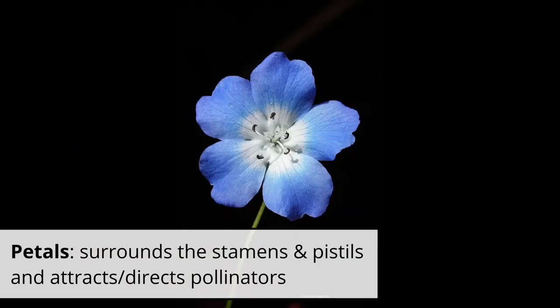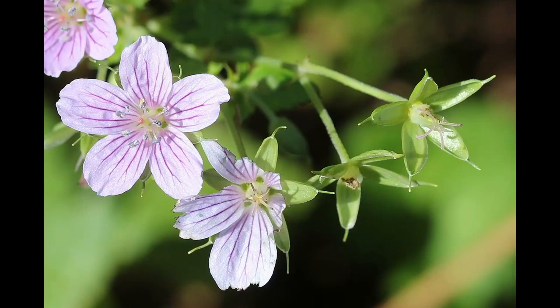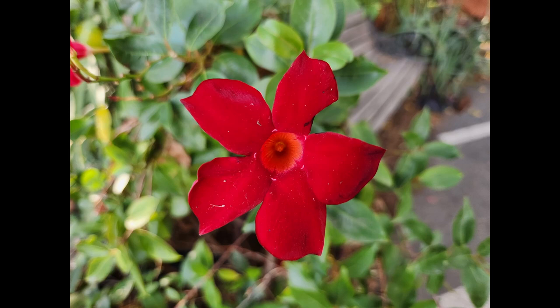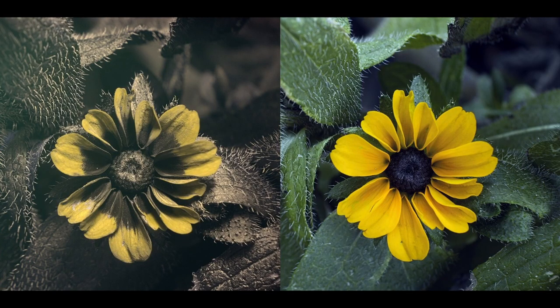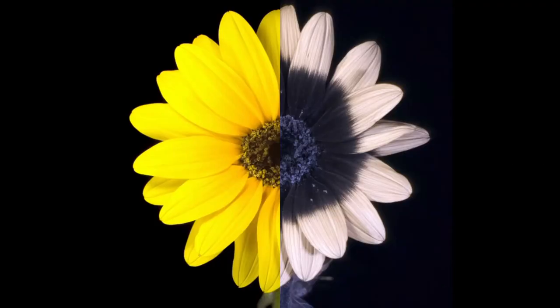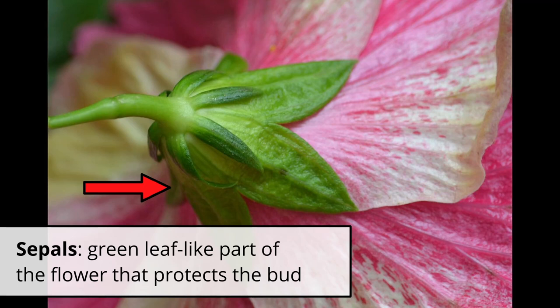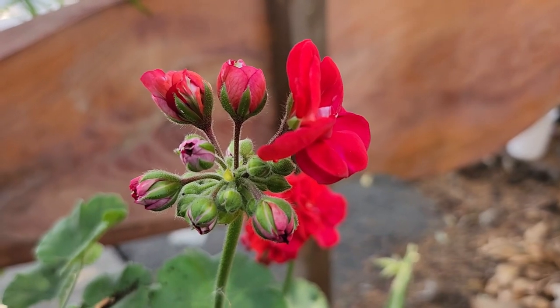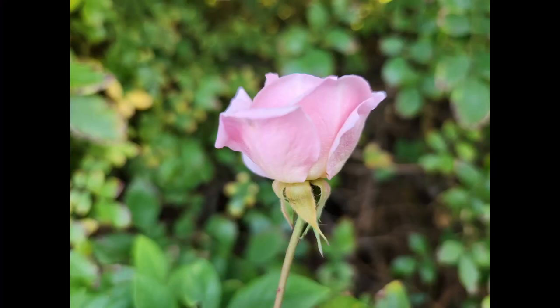Surrounding the male and female parts are the petals. There are a lot of different forms and shapes, not only to attract pollinators, but also to almost force certain insects to pollinate them. Some of these flowers look different under UV light, and that serves to highlight a landing pad for insects that can see that light. Lastly, around the petals are the sepals. These are usually green. They protect the rest of the flower parts when they're still in the bud, and once the flower opens, it still supports the rest of the flower.